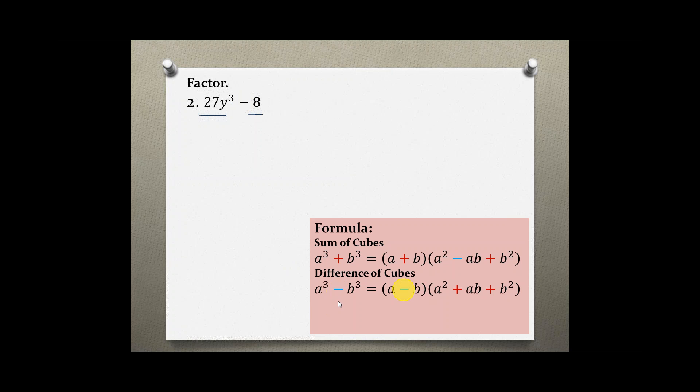And then a³ minus b³ equals (a minus b)(a² plus ab plus b²). So you have minus, plus, plus.